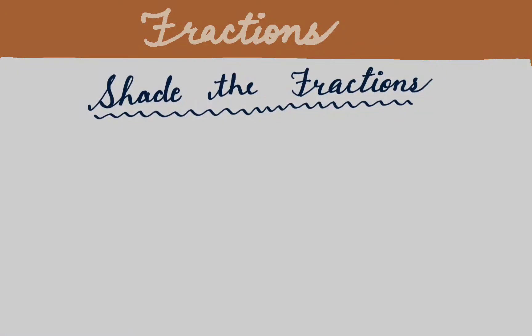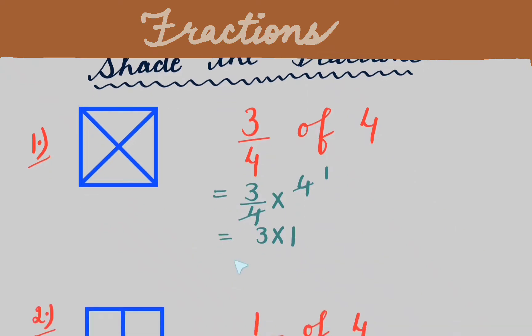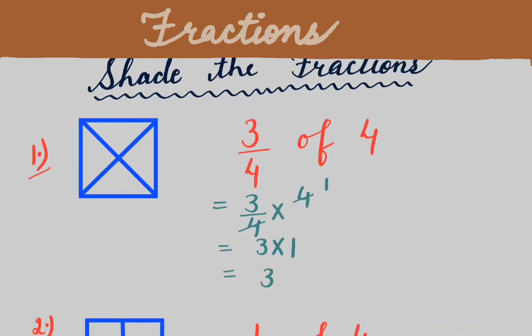The topic is shading fractions. In the first question, we have to shade 3 by 4 of 4. There are total 4 parts and we have to shade 3 parts out of 4. First of all we will solve it: 3 by 4 of means multiplication — 3 by 4 of 4, that is 3 into 1, which equals 3. So we have to shade 3 parts.